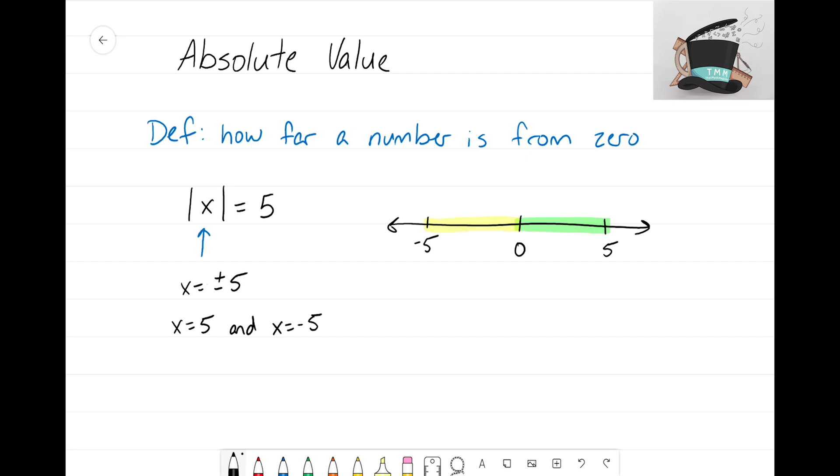Let's try another one. The absolute value of x equals 133. Again, we want to think about what number x could be so that its absolute value is 133. We're thinking of the number or numbers that are 133 units from 0.